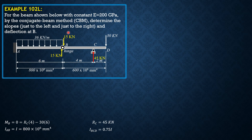Therefore, EI equals 200,000 megapascals times 800×10⁶, or 200×10⁶ times 800×10⁶ divided by 1000⁴, which converts to 160,000 kilonewton·meter squared. Remember the technique: for slopes, divide everything by EI; for deflection, divide by 160 to automatically convert to millimeters.